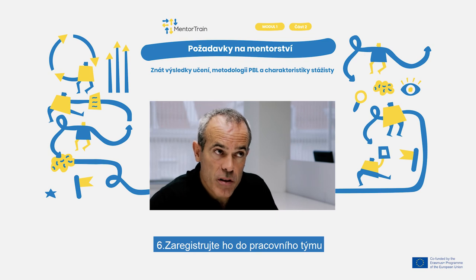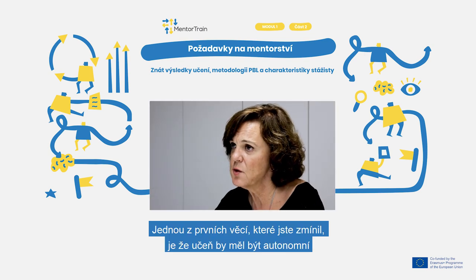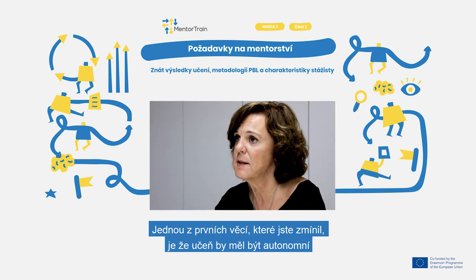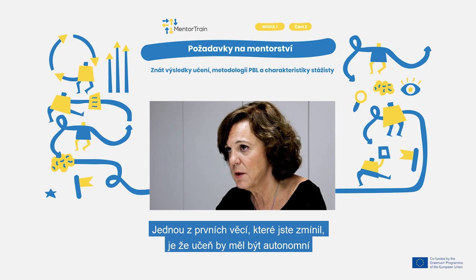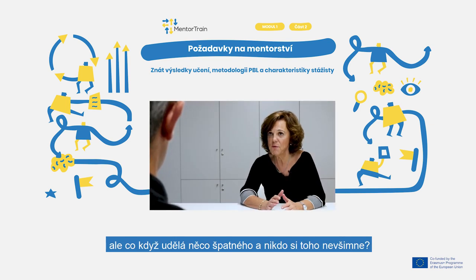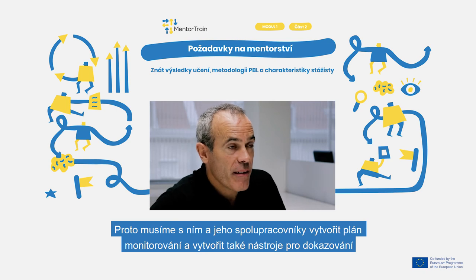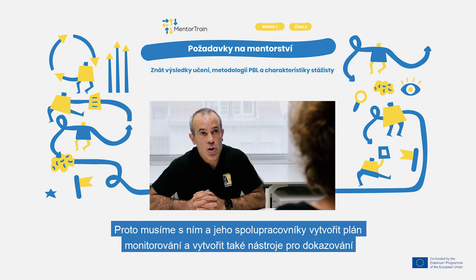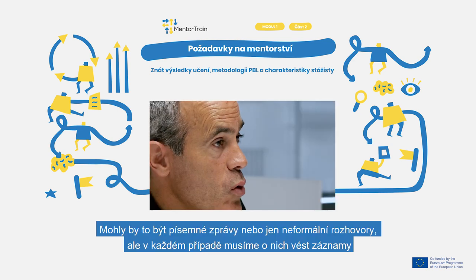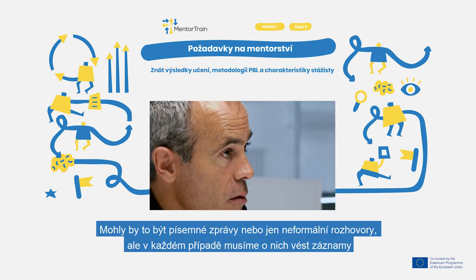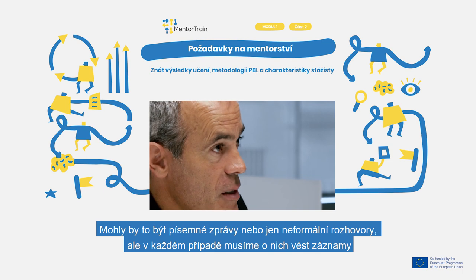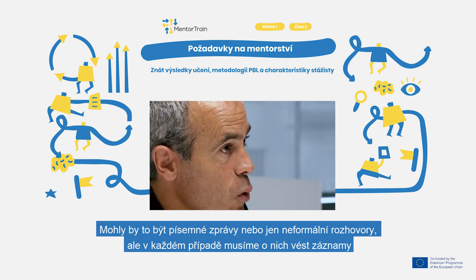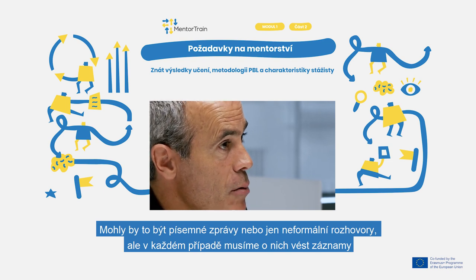One of the first things you mentioned is that the apprentice should be autonomous. But what if he does something wrong and nobody notices it? That's why we have to make a monitoring plan with him and with his workmates, and create tools for evidences — they could be written reports or just informal conversations, but at any case we have to keep record of them.